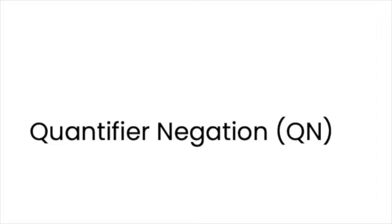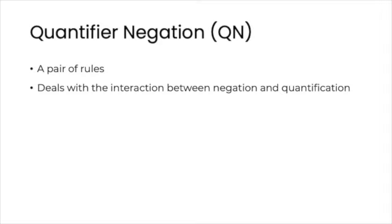Now let's study another very convenient pair of derived rules that goes under the collective name of quantifier negation. This pair deals with the interaction between negation and quantification, so we have one rule for the universal quantifier and another for the existential one.